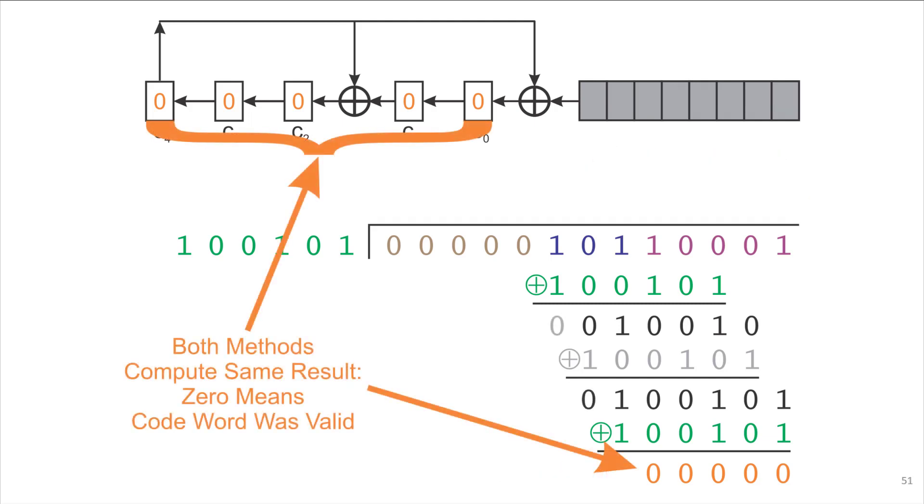Because we're validating a code word, the fact that both of these got a 0 result means that the code word was valid. And we're done. Thank you.